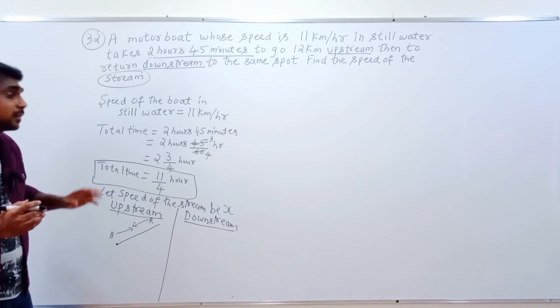So x equals plus or minus the square root of 25, giving x equals plus 5 or x equals minus 5. Since speed cannot be negative, x equals 5. Therefore the speed of the stream is 5 km per hour.